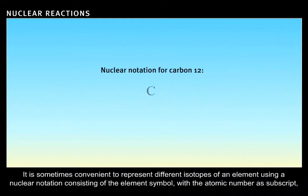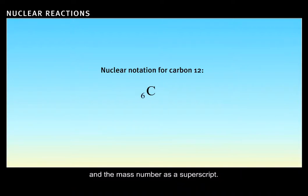It is sometimes convenient to represent different isotopes of an element using a nuclear notation consisting of the element symbol, with the atomic number as a subscript, and the mass number as a superscript.